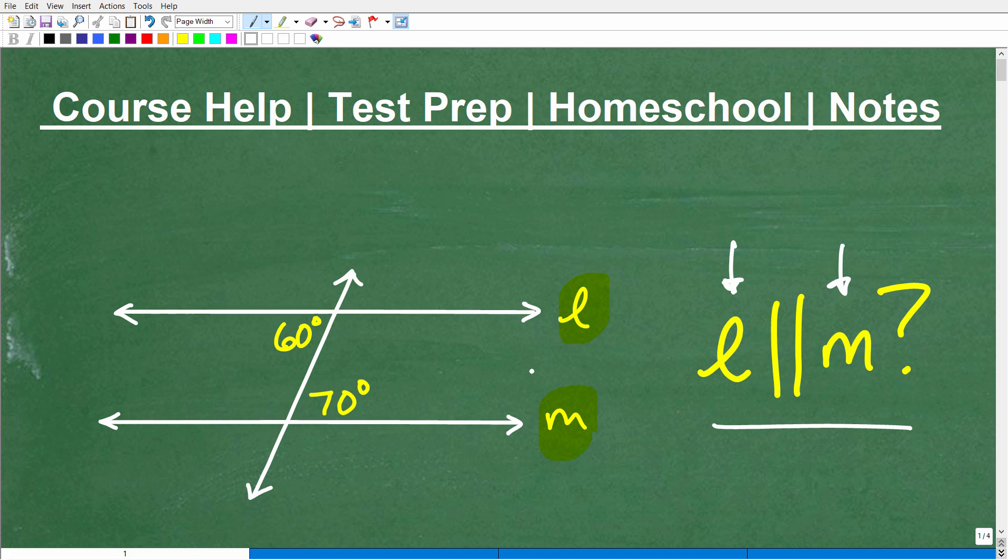Okay, so obviously these lines are either parallel or not. But we have this other line right here. And let's go ahead and give that a name as well. We'll call that line T. And this is what we call a transversal. It's another line that crosses through two or more other lines. So this is what we call a transversal. And then obviously we have some information here, some angles.